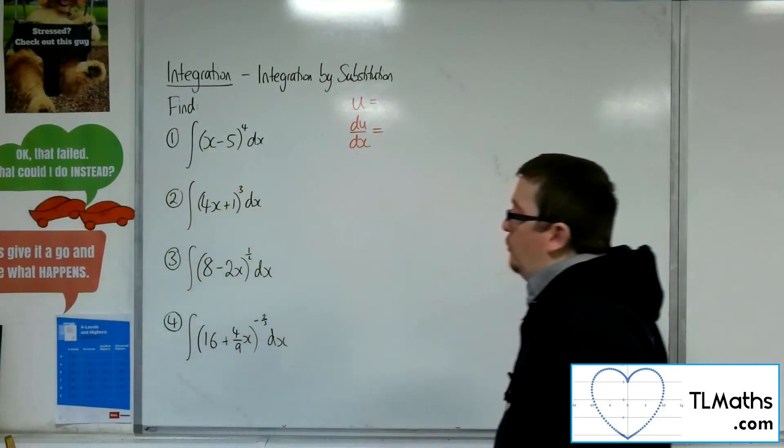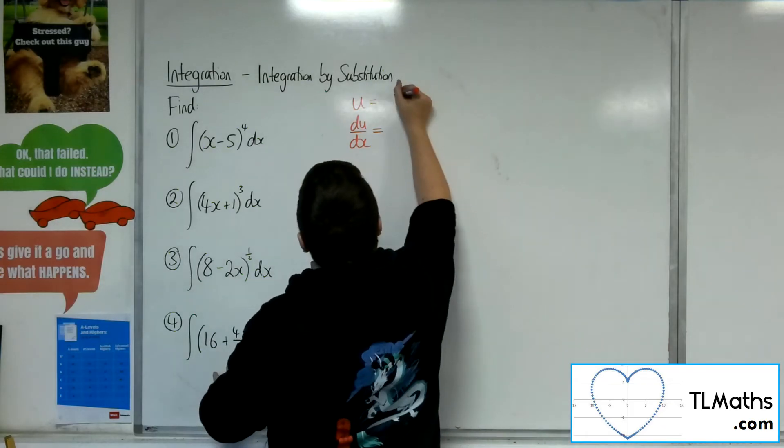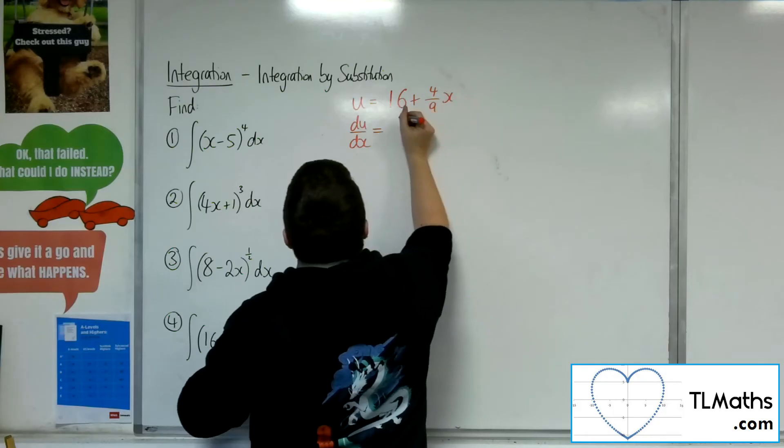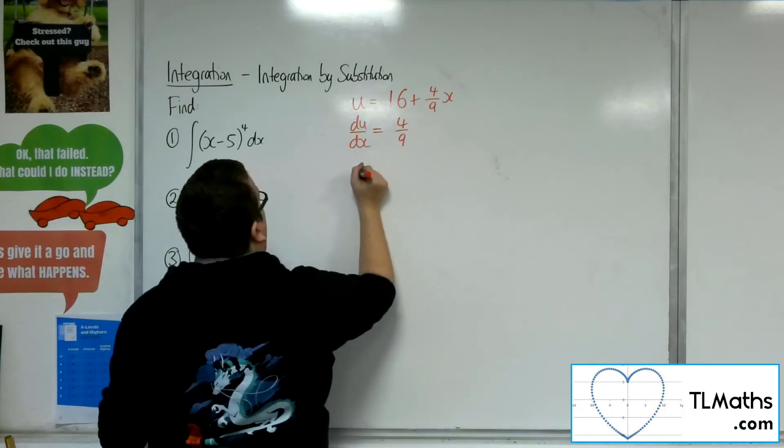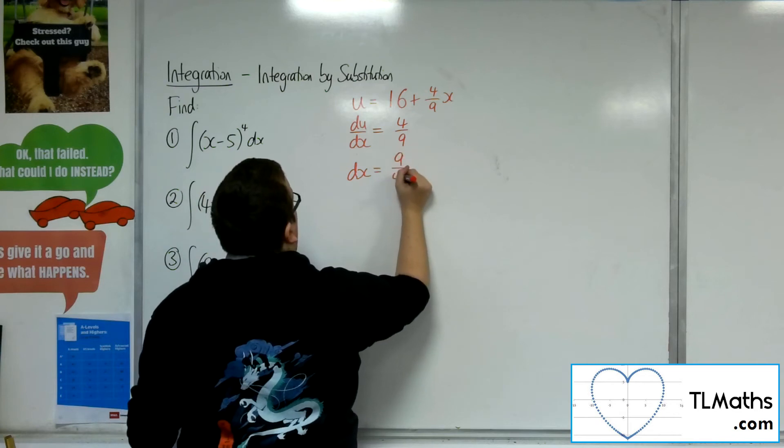Right, last one, number 4. 16 plus 4 ninths x to the minus 2 thirds. So the u is 16 plus 4 ninths x. Differentiate that to get the 4 ninths. So dx is going to be 9 quarters du.